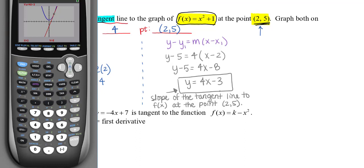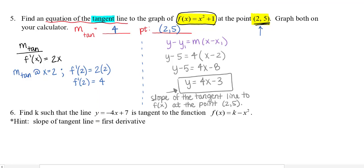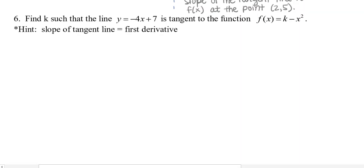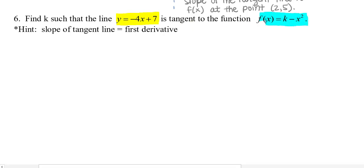If you move your point you'll have a different tangent line equation. Now let's look at the next problem: I'll give you information about the tangent line and you work backwards to identify the original function. Find k such that the line y = −4x + 7 is tangent to f(x) = k − x², where k is what we're solving for. The hint is: slope of the tangent line equals the first derivative.